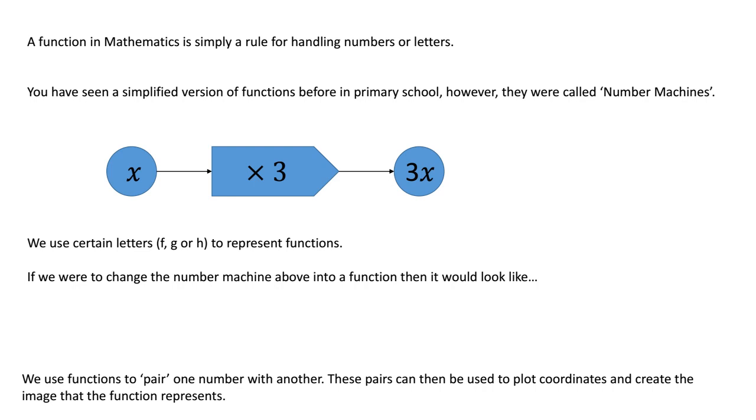You've seen simplified versions of this before in primary school. They were called number machines. For example, to hopefully spark your memory, where if we take a number, in this case I've called it x, we know that a letter is just a number we don't know yet, and we times it by 3, then at the end of the number machine we get 3x. So if we were going to do that with a number, let's pick 6, and if we do it times 3, then what we get is 18. We get 3 times 6, so we get 18. And that was a number machine.